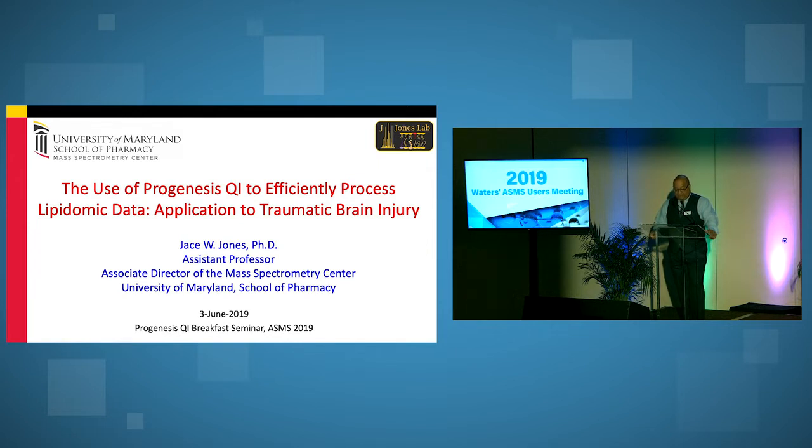He then left academics research and took a position as technical director at an analytical lab, then he came back to academic research, and then was appointed the research assistant professor in the laboratory of Maureen A. Kane at the University of Maryland School of Pharmacy, where he is currently an assistant professor and associate director of the Mass Spectrometry Center at the University of Maryland School of Pharmacy, where his research group focuses on developing mass spectrometry platforms to probe the structure and functional dynamics of lipids, glycolipids, and glycans. Jace Jones.